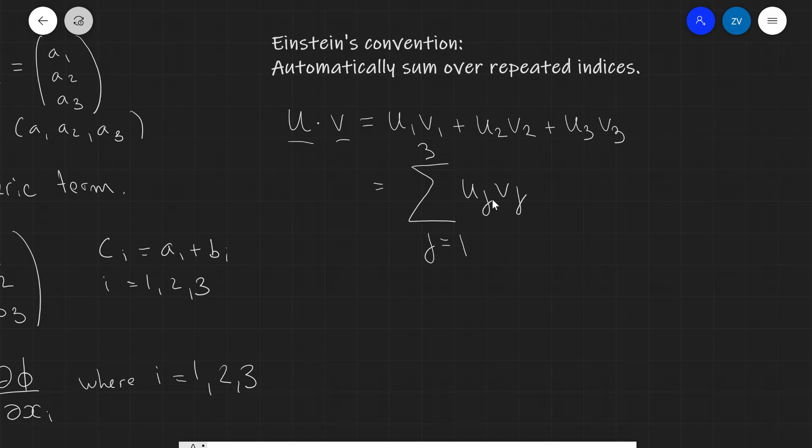Now, Einstein simply did not write this summation sign. So, what he literally said is that anytime I write the product of u index j multiplied by v index j, I will automatically be getting a sum. So, this is equal to the dot product of these two vectors.